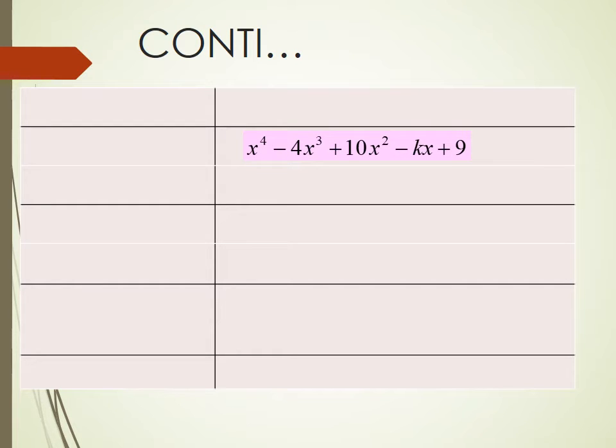Let's start division of x raised to the power 4 minus 4x cube plus 10x square minus kx plus 9. Square root of x raised to the power 4 we get x square. So x square multiplied by x square we get x raised to the power 4. Both x raised to the power 4 have same sign so we should subtract.